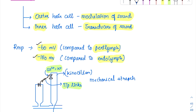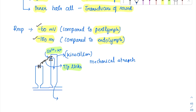When this tip link channel opens and ions enter, there should be release of a neurotransmitter through which the potential can be carried out. The neurotransmitter released in this scenario is glutamate.